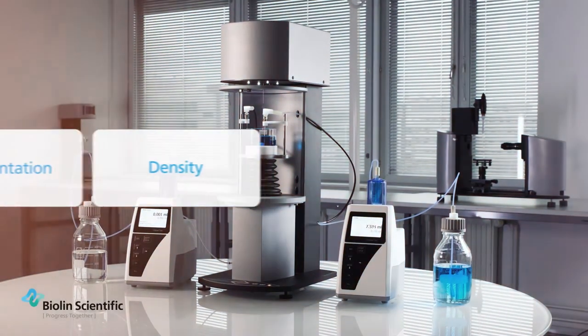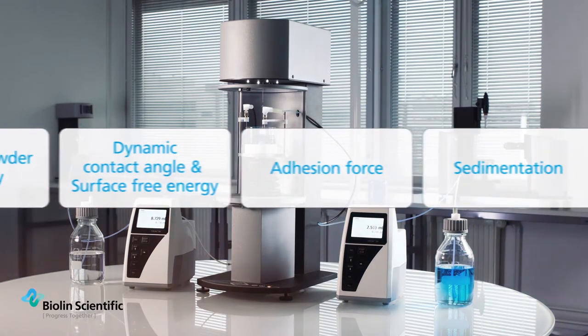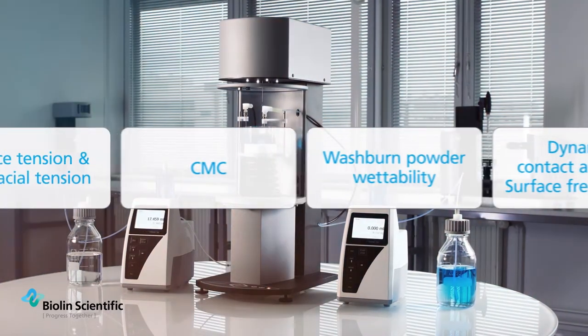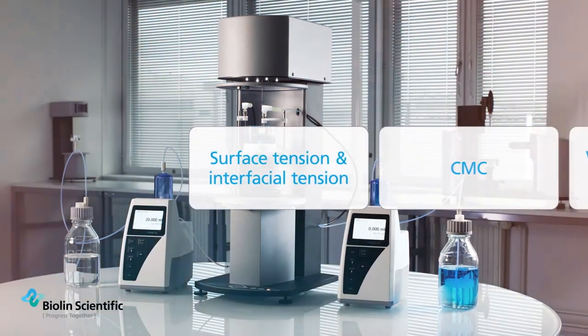Attention Sigma 700 and 701 are force tensiometers designed for optimal ease of use. They measure interfacial properties such as surface tension and contact angle.